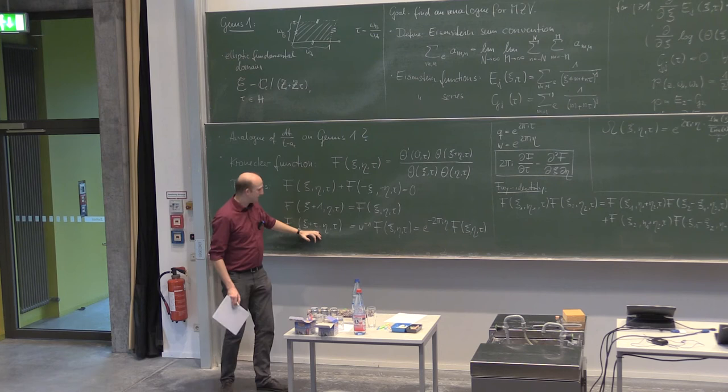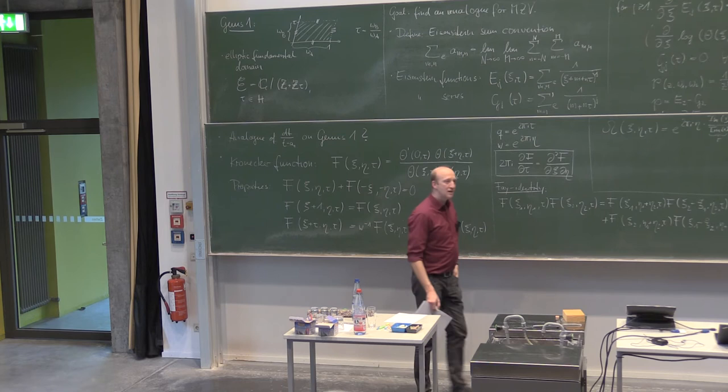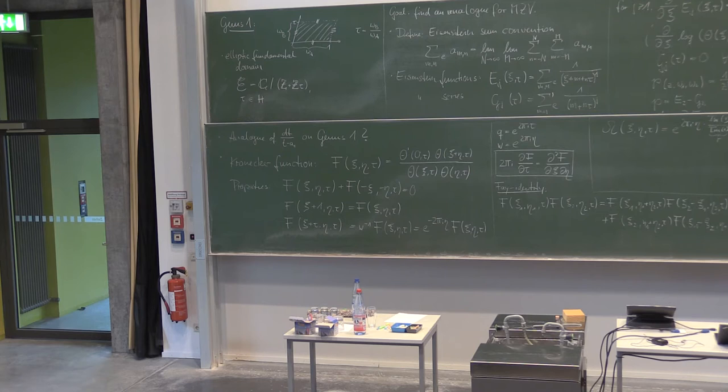Shifting ξ by τ would bring me up in the other direction which spans the parallelogram. This function is not doubly periodic — it's not really periodic along these two directions because we get this additional factor. What does η represent in this picture? τ is the variable describing the geometry of the torus. ξ can move on the real axis and move around in the τ direction as well.